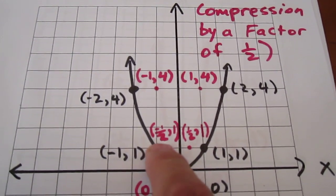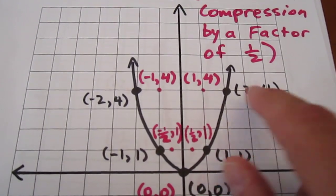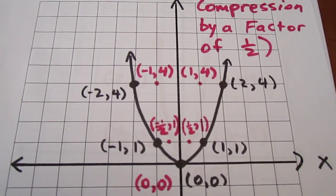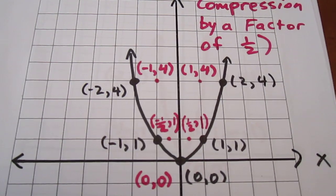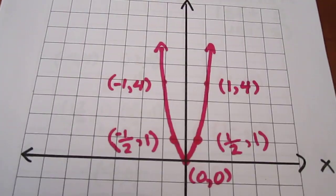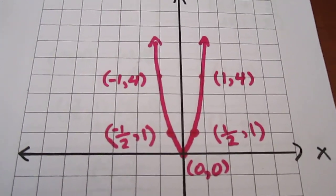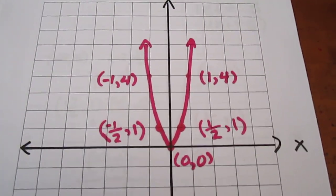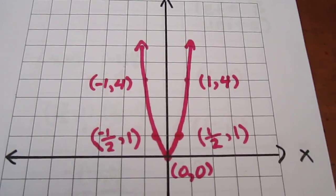Negative 1, 1 becomes negative 1 half 1. 2, 4 becomes 1, 4. Negative 2, 4 becomes negative 1, 4. We can then ignore our black curve and simply focus on the pink curve, which is right there. And this is what our function looks like, one transformation into a 4 transformation process.